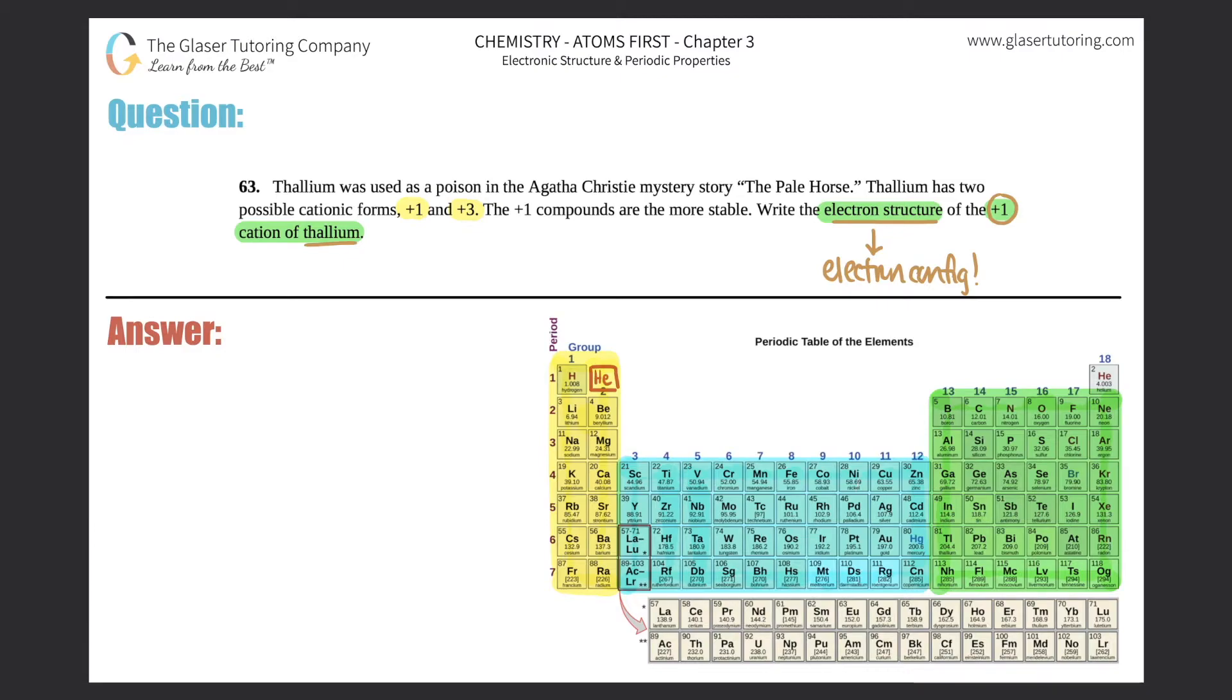How do we find an electron configuration for cations, or just ions in general? Well, two steps. The first thing you're going to do is pretend that the ion, or the cation in this case, doesn't exist.